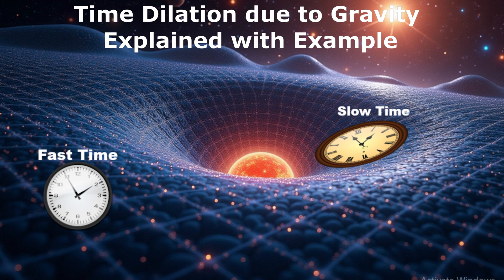So, the clock near the planet ticks slower compared to the clock farther away. This effect is known as time dilation.